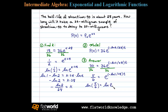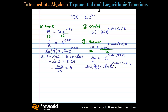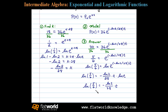We write the natural log of 5/6 equals the natural log of e to the negative natural log of 2 divided by 28 times t power. Applying the power rule for logarithms, we write the exponent as a coefficient. Since the natural log of e equals 1, we have the natural log of 5/6 equals negative natural log of 2 divided by 28 times t.